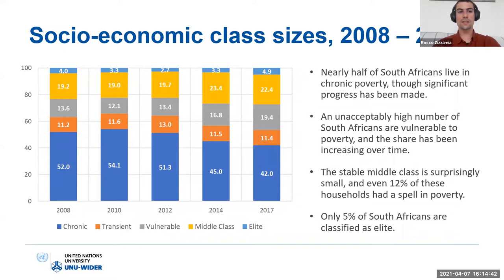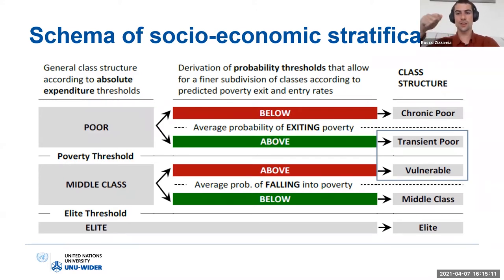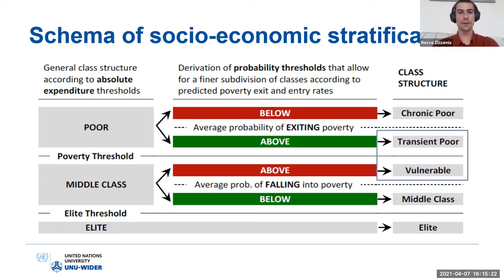On the right-hand side, the transient poor and the vulnerable are highlighted because we expect these people to be swapping places frequently over time. The transient poor are below the poverty threshold at any moment in time but likely to move above it, and the vulnerable are above the poverty threshold but likely to move below it. We expect these two groups to be somewhat similar and to be swapping positions over time.